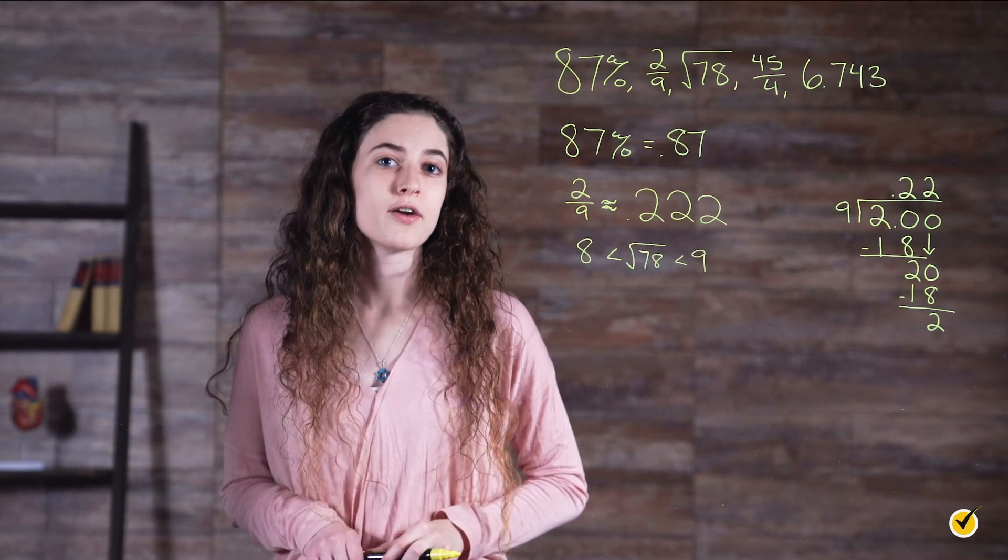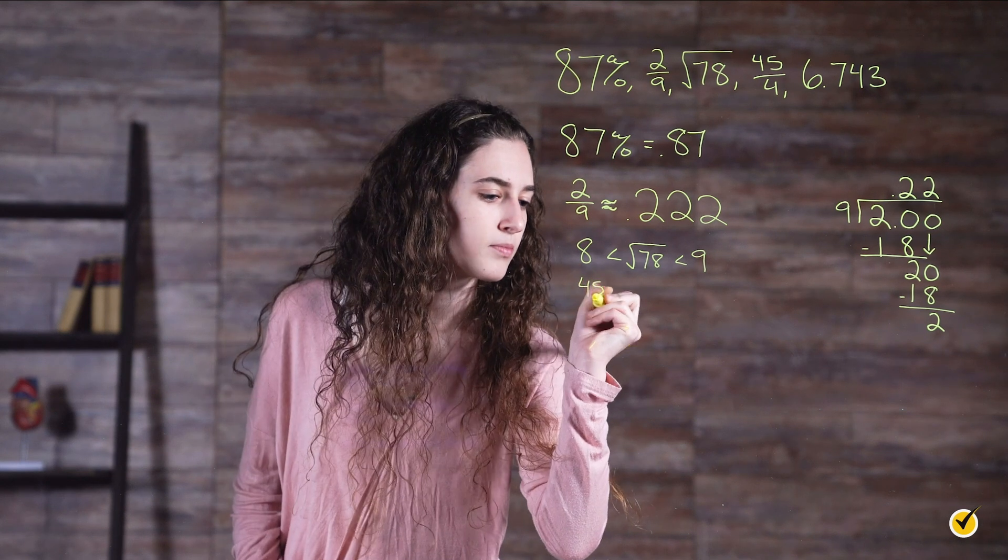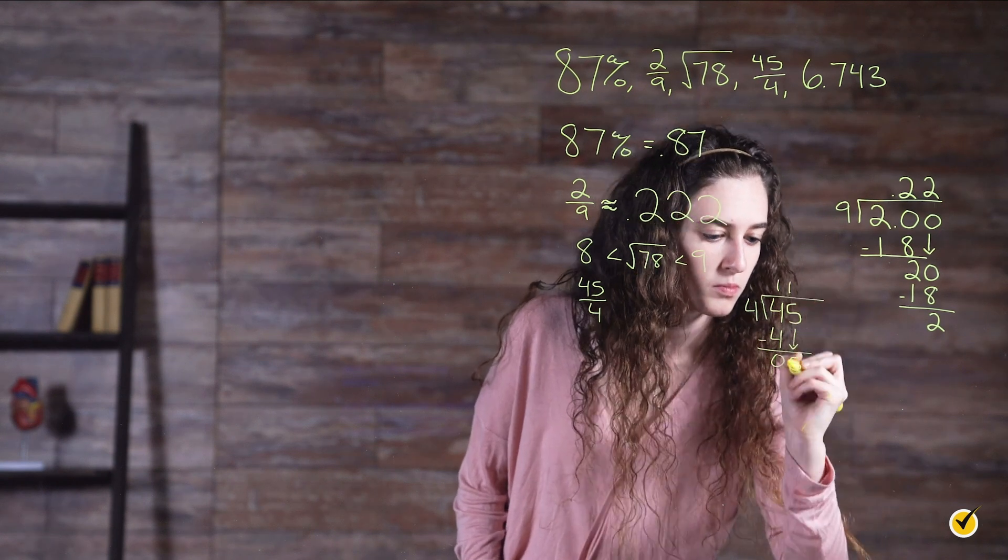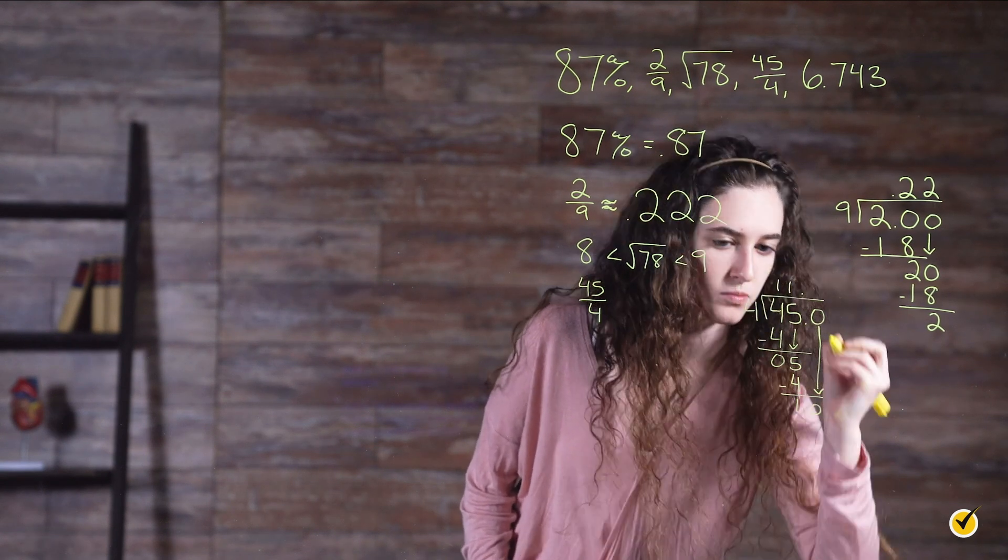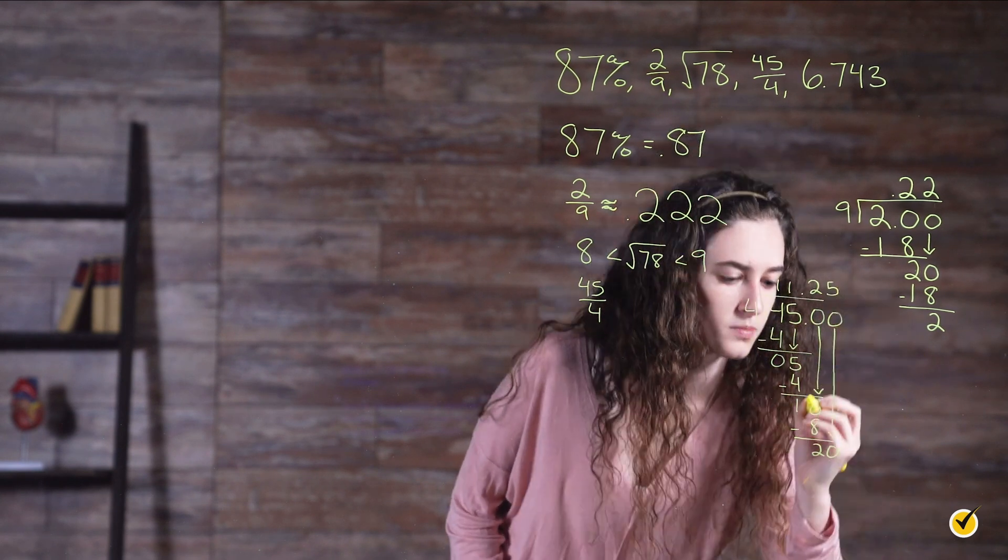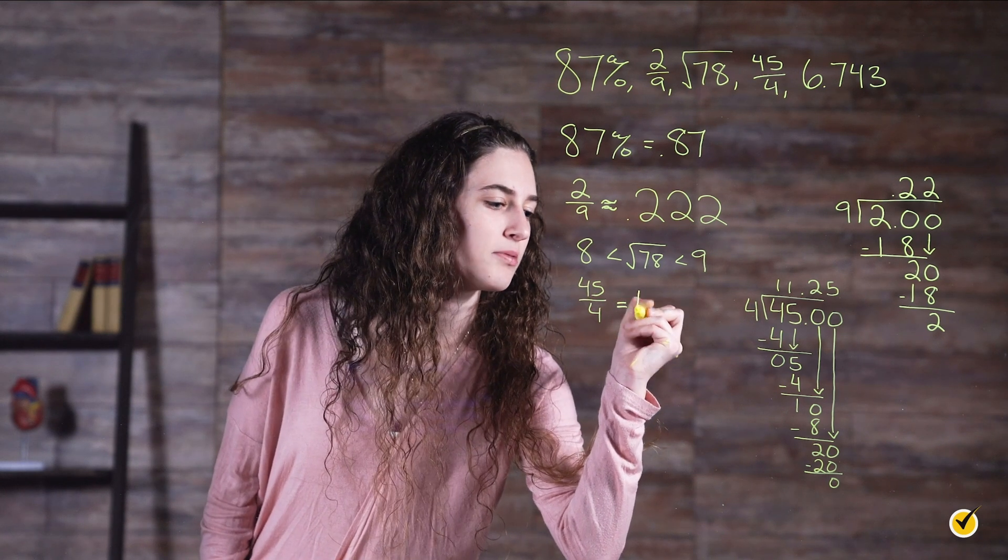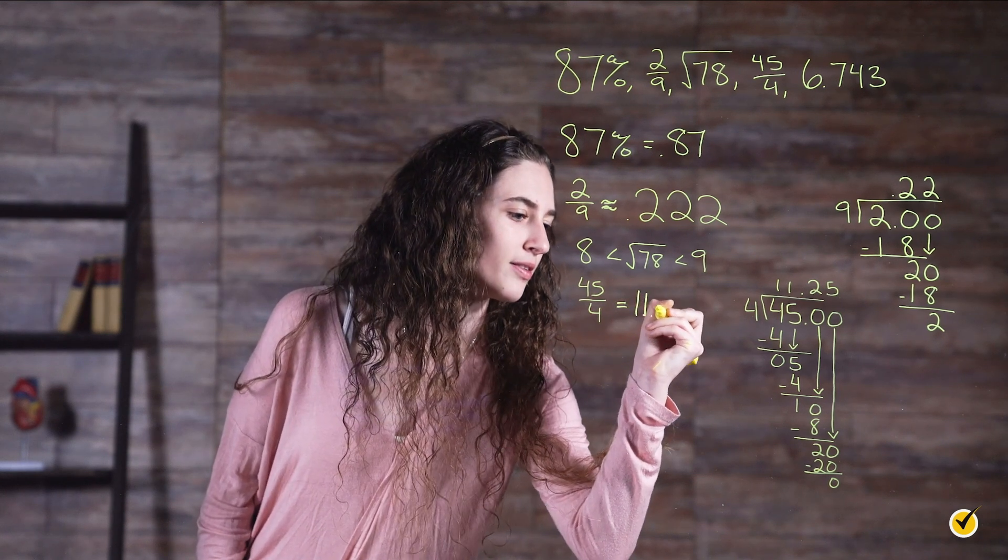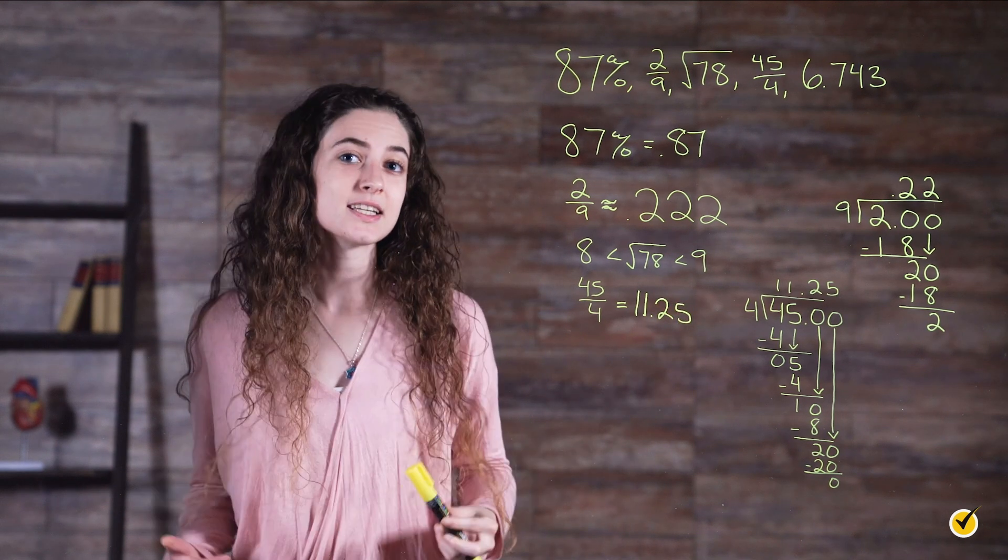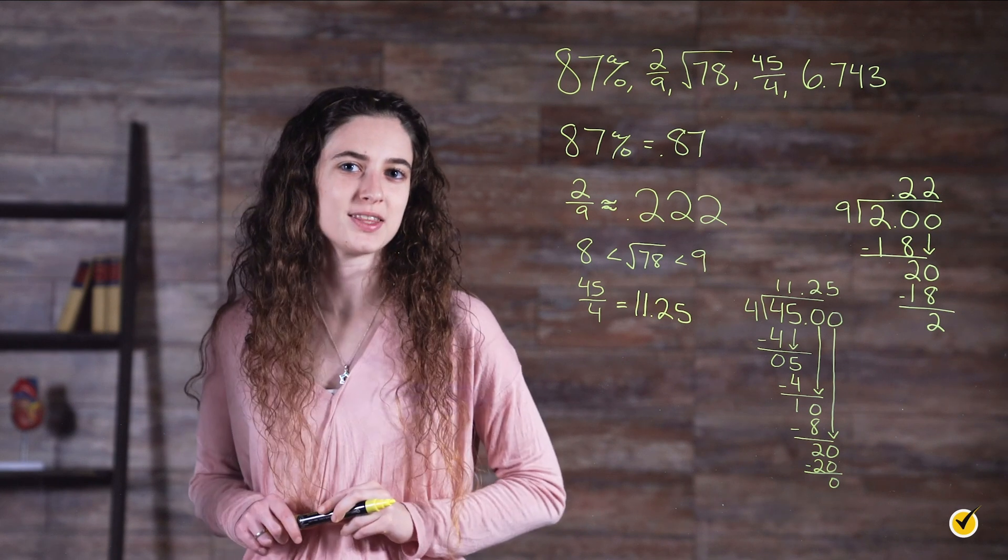We can find 45 over four by dividing, just like we did with two over nine. And 6.743 is already in decimal format, so we don't have to do anything with that number.